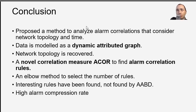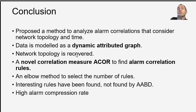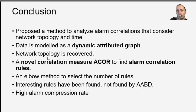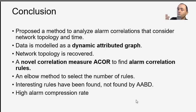In summary, we propose a method to analyze alarm correlation for fault management in telecommunication networks. We model the data as a dynamic attributed graph, and compared to previous work we incorporate the network topology while previous papers only consider alarms as a sequence without topology. We achieve a high alarm compression rate of 87%. That's all for my talk — thank you for listening. If you have questions we can discuss, or you can contact us.